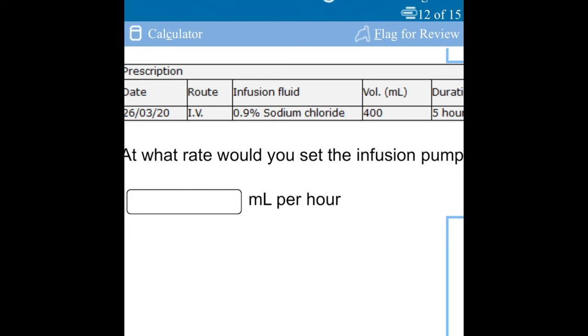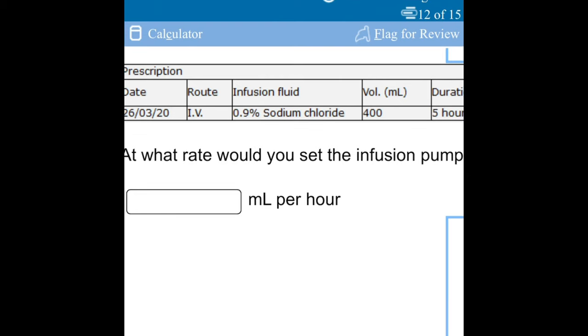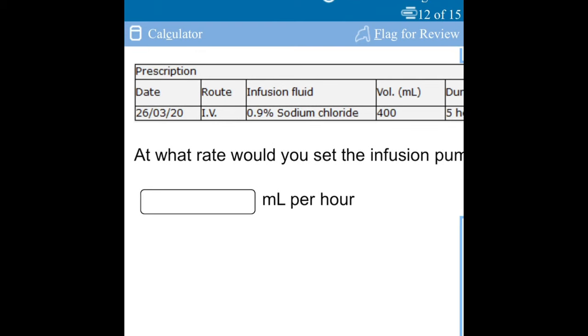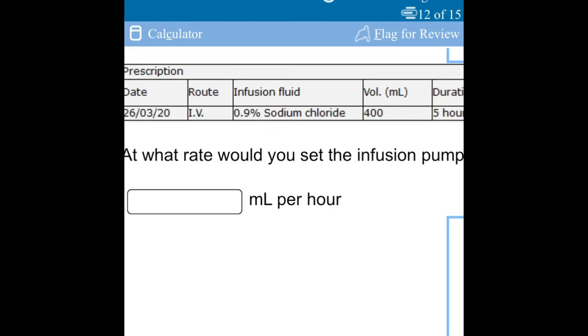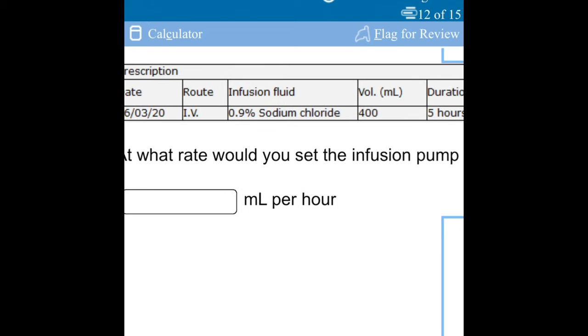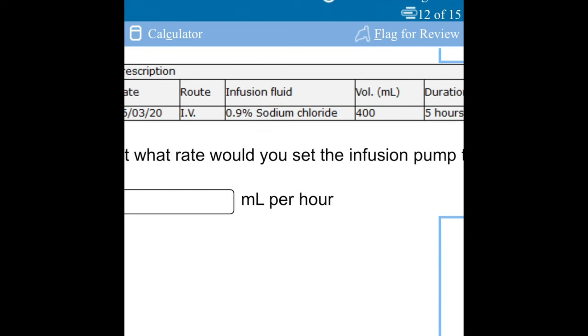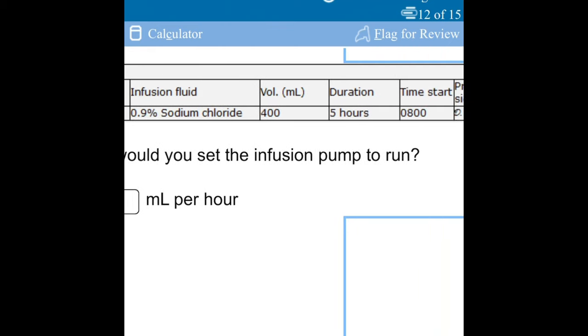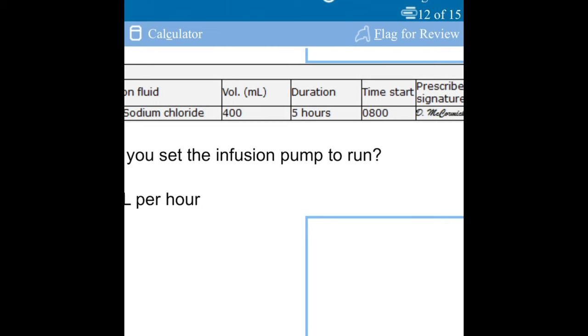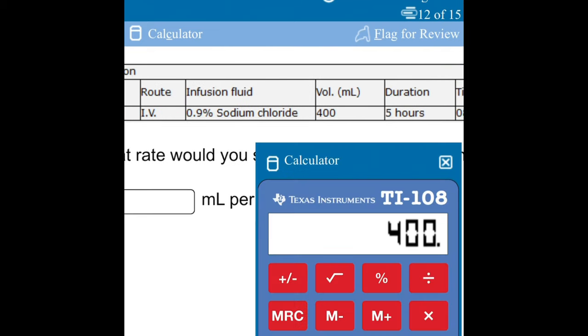With this question, we have been asked to calculate the rate of infusion. We are asked to calculate the rate that we will set the infusion pump in mL per hour. We will just divide our volume in mL per duration. You will get 400 divided by 5, and then you get your answer as 80.